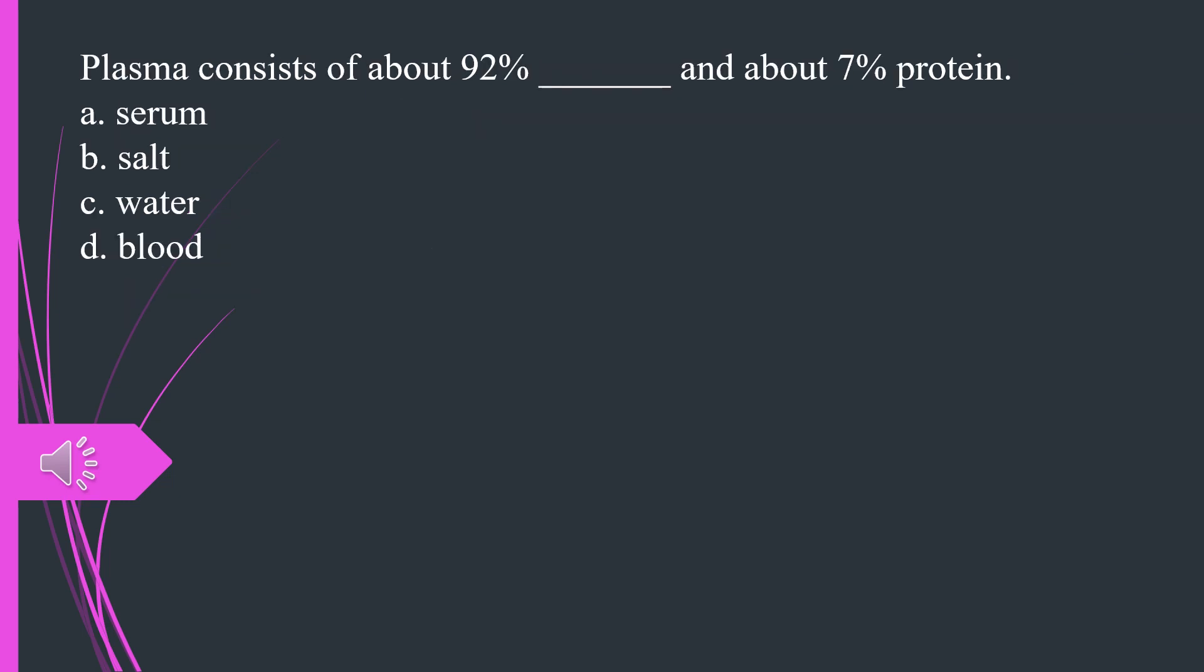Plasma consists of about 92% of what and about 7% protein. A. Serum B. Salt C. Water D. Blood. The answer is C, water.